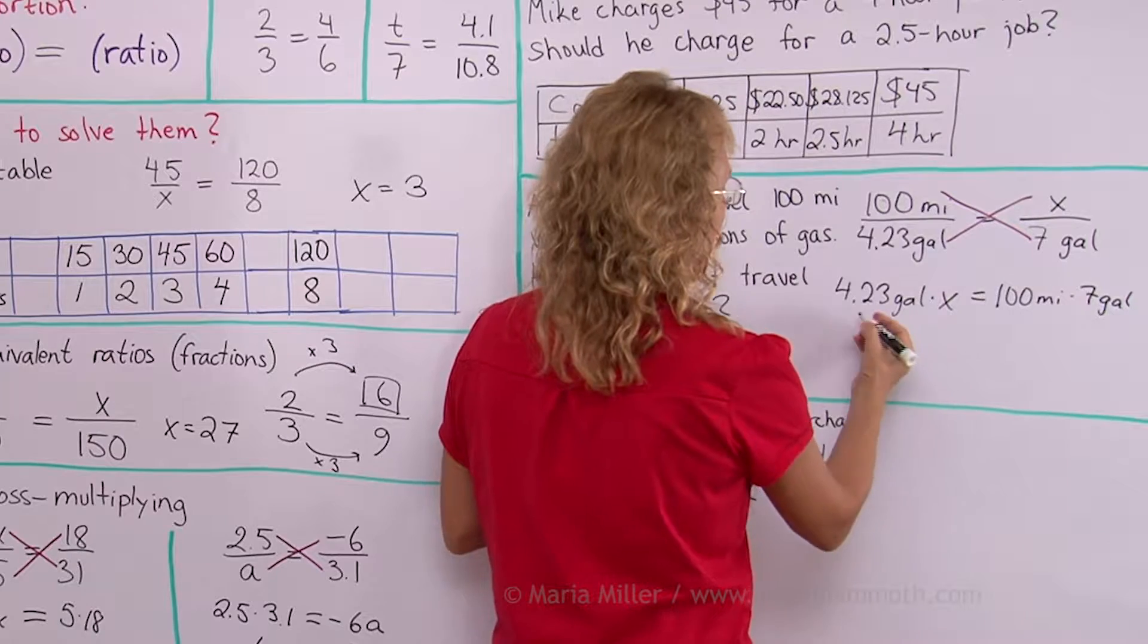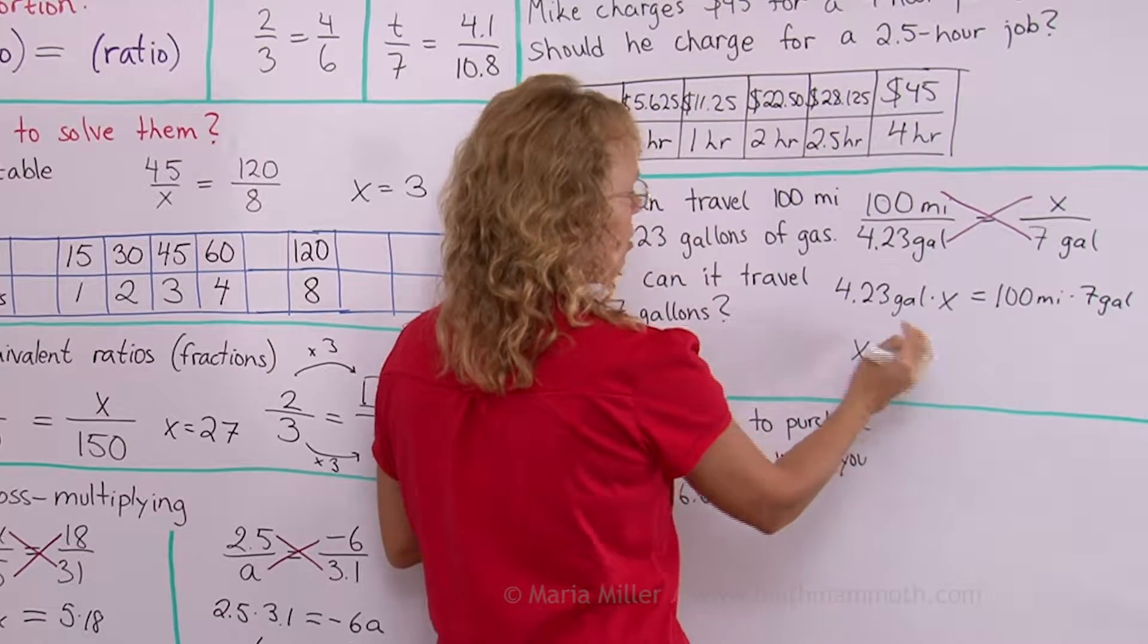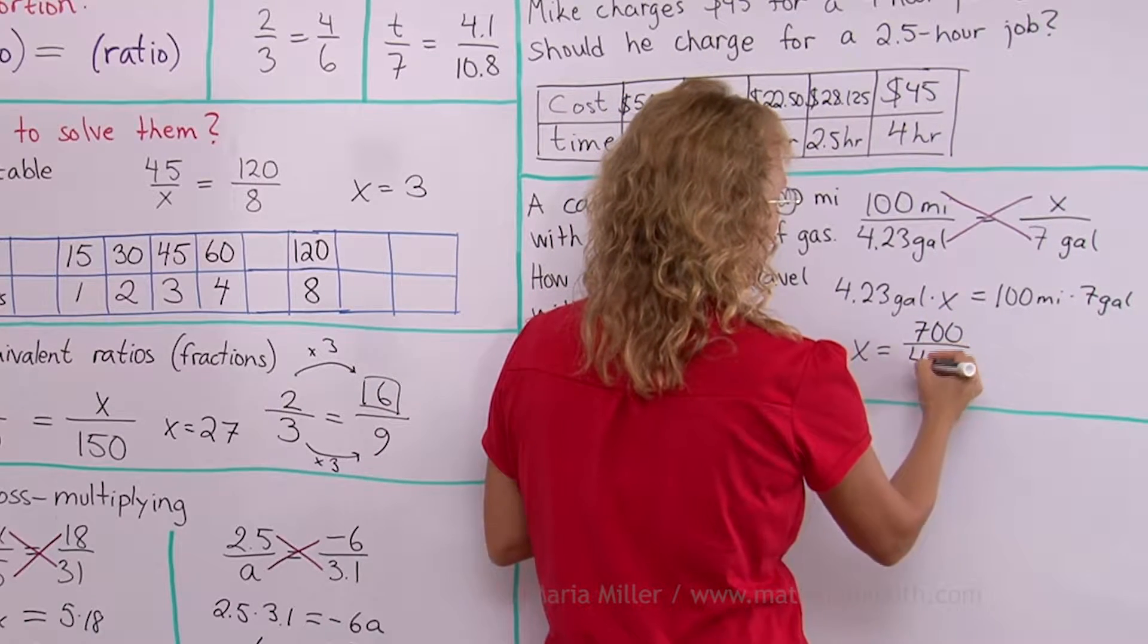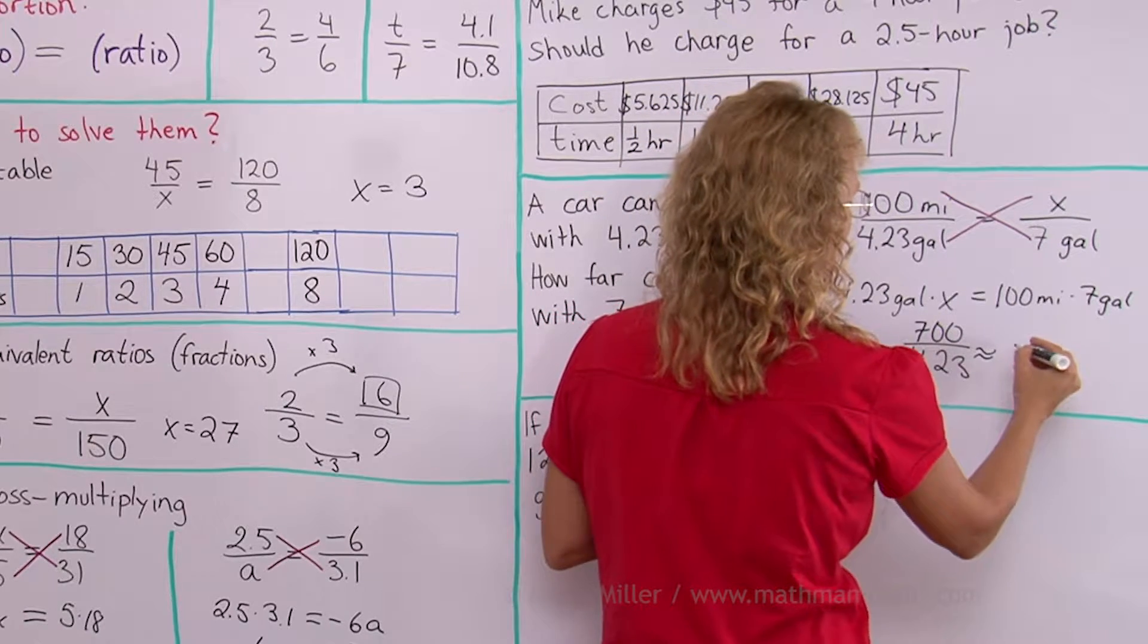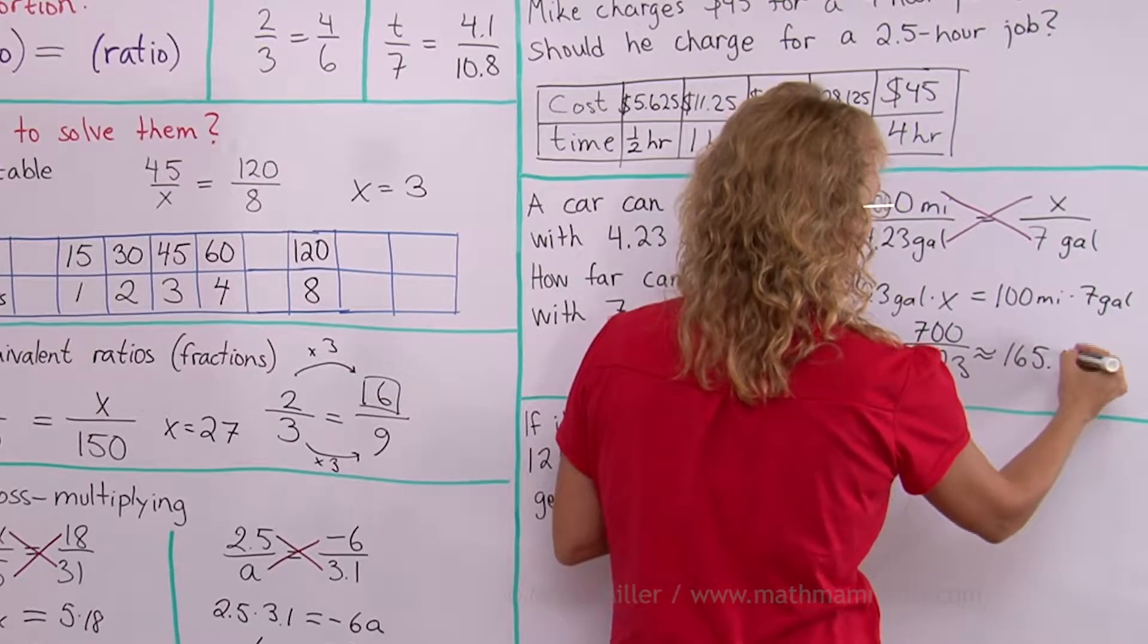Here I get 700 and here is 4.23. I need to divide both sides of the equation by 4.23. So it will be 700 divided by 4.23. And the answer for this is 165.5 miles.